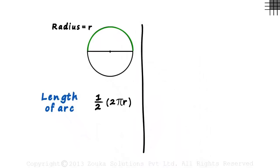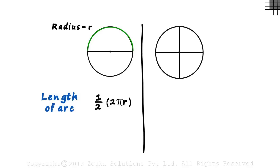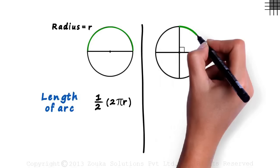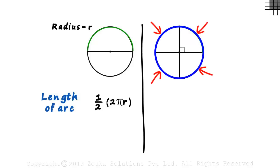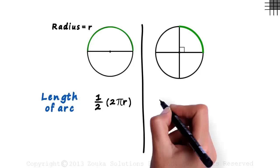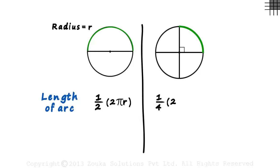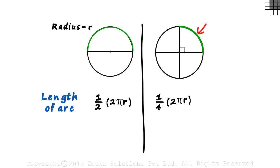Now consider a circle divided into four equal parts, like this. What will be the length of this green arc? Since the circle is divided into four equal parts, the circumference will also be divided into four equal parts. So the length of the arc will be one fourth of the circumference. The first arc is half the circumference and this arc is one fourth the circumference.